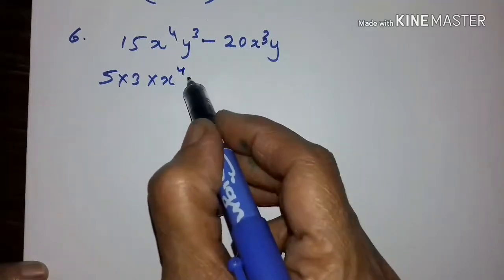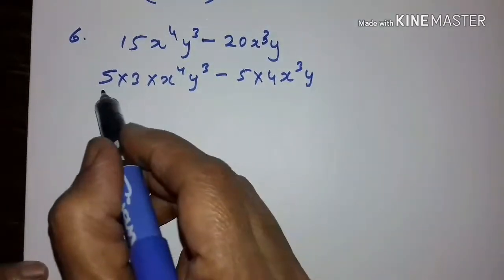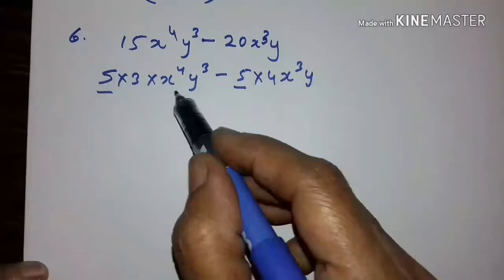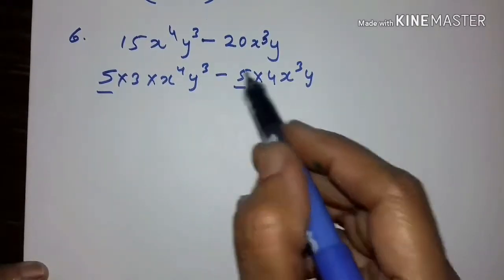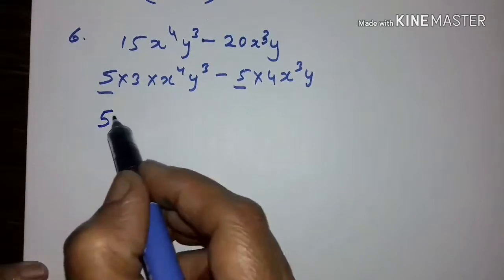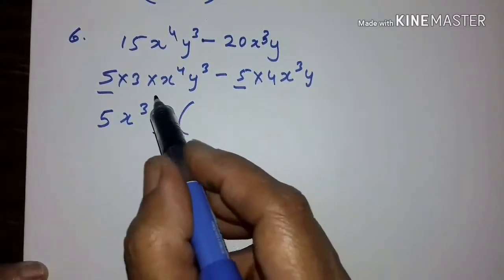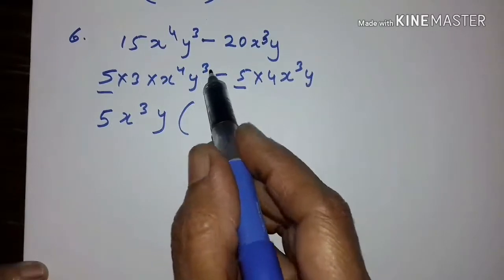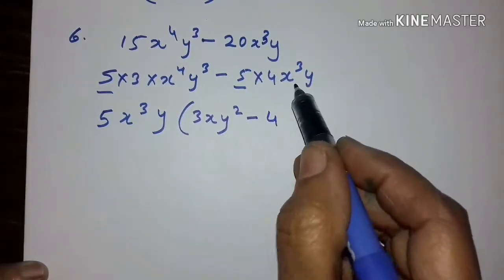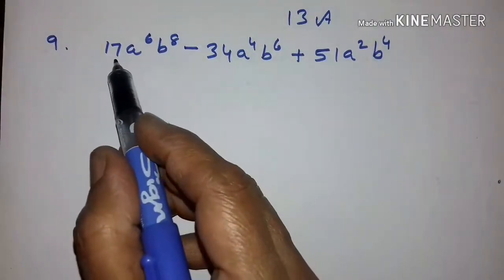The next expression is 5 into 3 into x raised to the power of 4, y cubed minus 5 into 4x cubed y. Here 5 is common. It is x to the power of 4 and x cubed, therefore x cubed is common. And here it is y cubed and here only y, therefore y is common. Taking the common out: 5x cubed y. What remains is 3xy squared minus 4. The 5, x cubed, and y have been taken out.